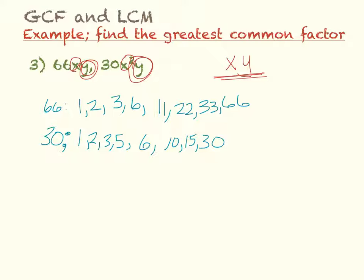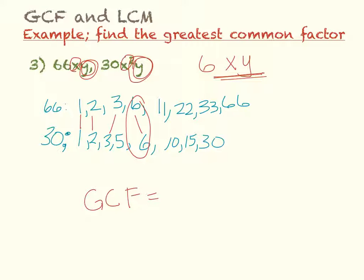Now we look for the greatest factor they both share. They both have 1, 2, 3, and 6. The biggest one they both have is 6. So the greatest common factor of 66xy and 30x²y is 6xy.